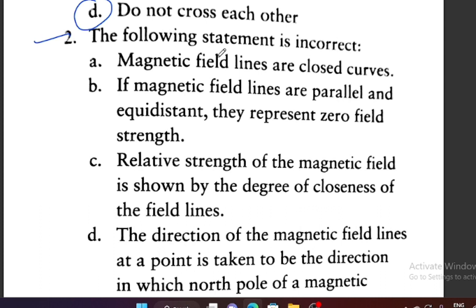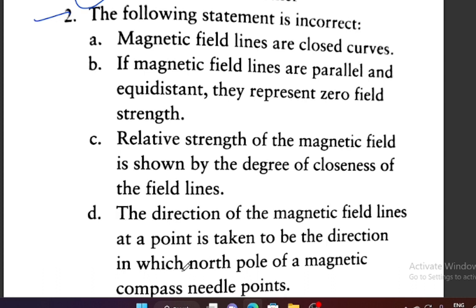Question 2: Which statement is incorrect? Option A: magnetic field lines are closed curves. Option B: if magnetic field lines are parallel and equidistant, they represent zero field strength. Option C: relative strength of magnetic field is shown by degree of closeness of field lines. Option D: direction of field lines is taken as direction in which north pole of compass points. Option B is incorrect — parallel and equidistant field lines represent a uniform magnetic field, not zero field.